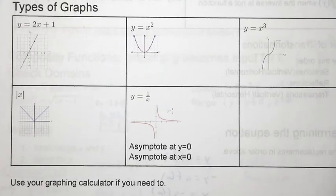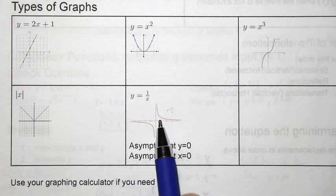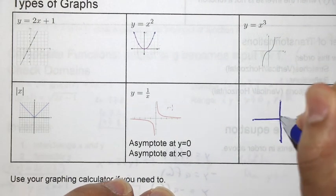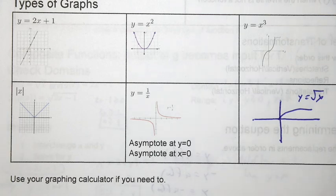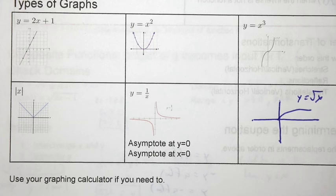Also be familiar with all types of graphs. We have linear graphs, the quadratic, the cubic, absolute value, and rational. One that I didn't mention here, you have y is equal to square root x. Be familiar with all the domain and range of all these graphs. Remember to use a graphing calculator if you need to. That's the review. Good luck.